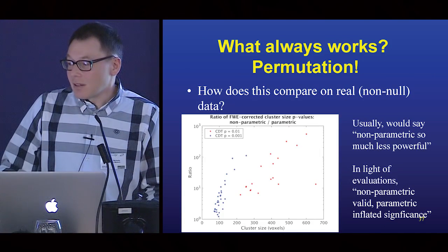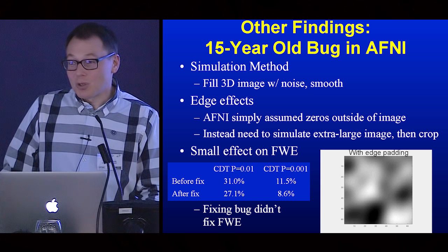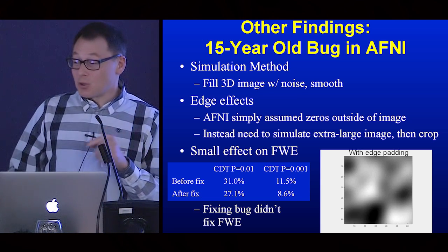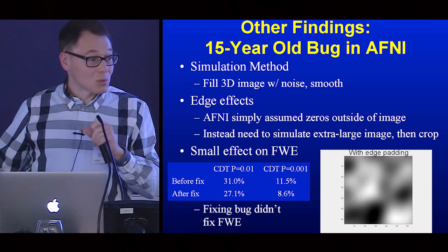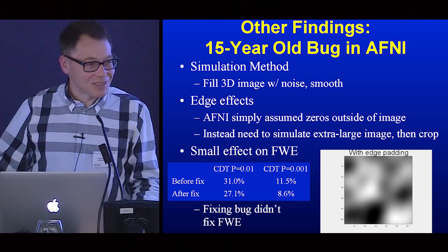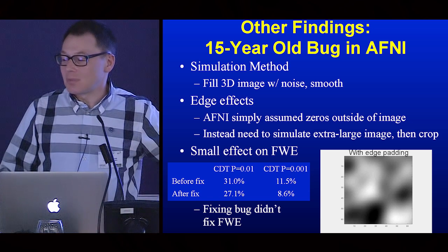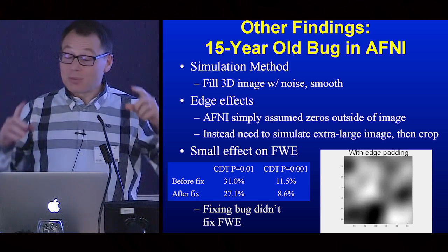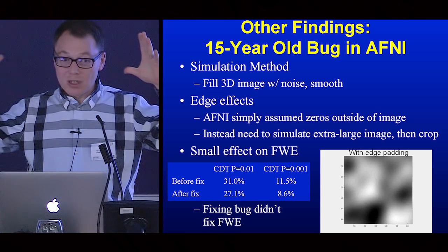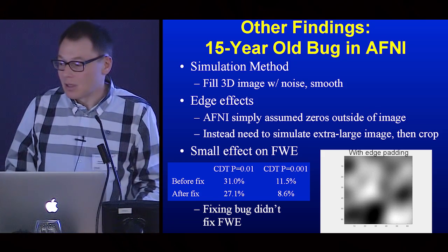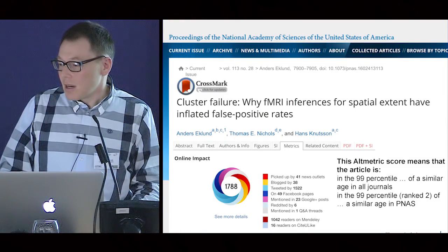We also found a bug in software that had been used for 15 years — some people were using software A, getting their threshold from software B, then going back to software A. When this bug was fixed it didn't make much difference. It was a simple issue: if you do spatial simulations with smoothness, you have to take care of edge effects, the simplest way being to smooth an image that's too big and then crop down to get edge-unaffected data.